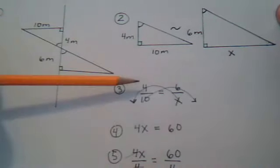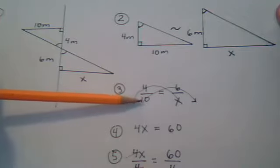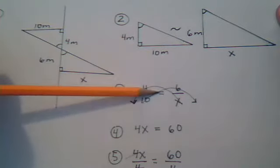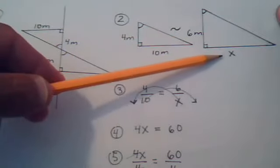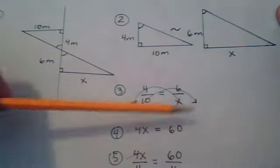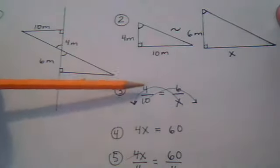So the way that 4 compares to 10 is the same way that 6 should compare to X. Now that you have your proportion, you cross multiply.